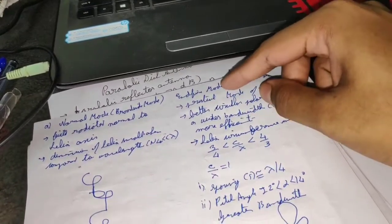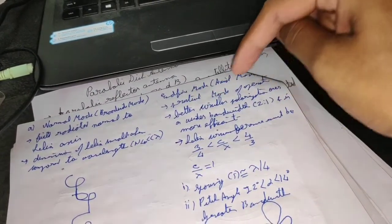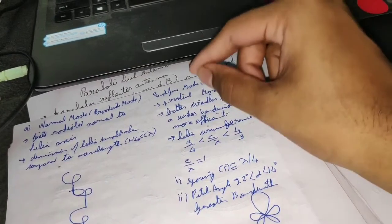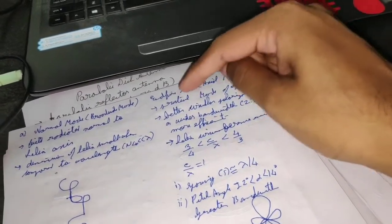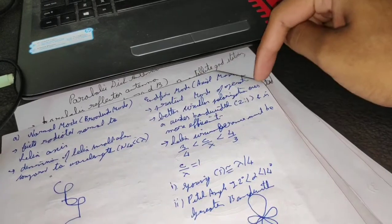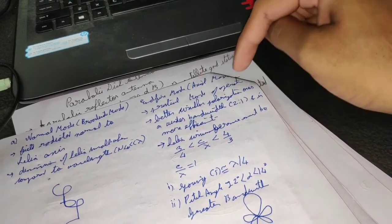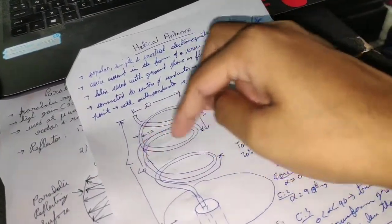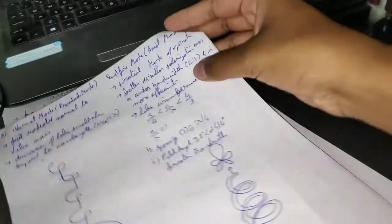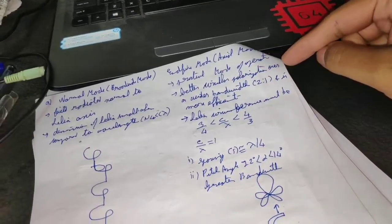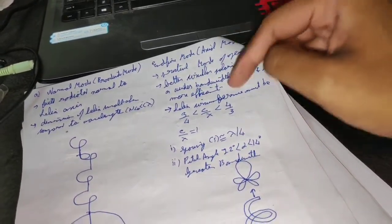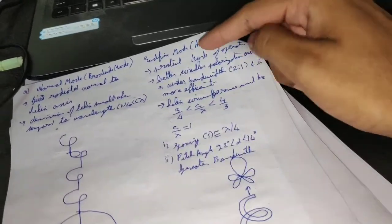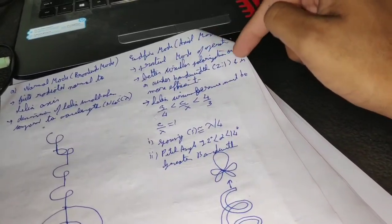The second mode is End-fire mode, also called Axial mode — this is the practical mode of operation. A useful memory aid: 'EA sports' — E for end-fire, A for axial. End-fire (axial) mode offers better circular polarization (remember: the helix has lots of circles, so it has circular polarization) and a wider bandwidth of 2:1. It is also more efficient.